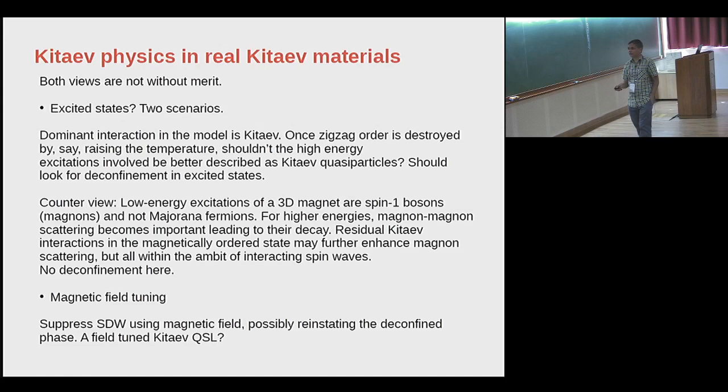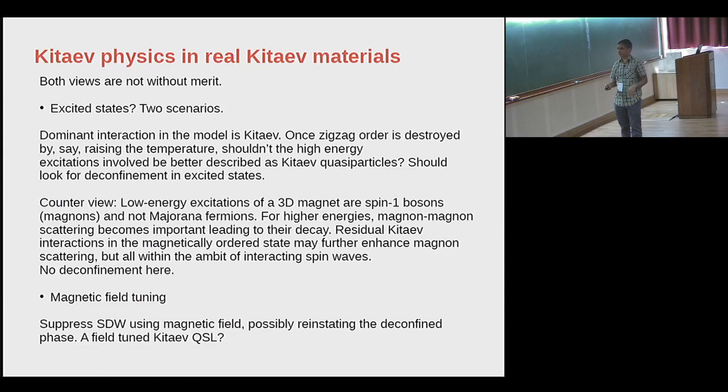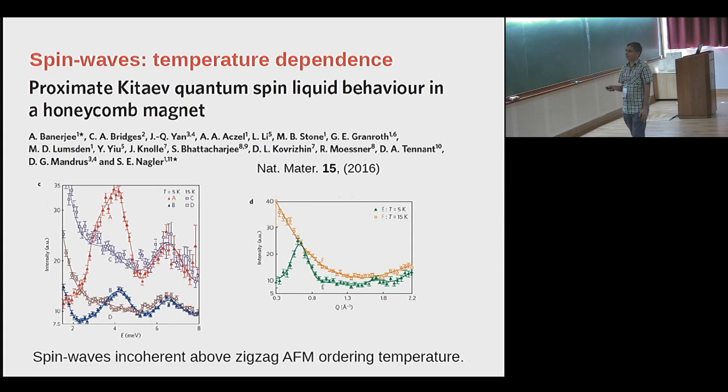The second strategy is to not look at very high excited states, but to go to low-energy states and instead try to destroy the magnetic order using a magnetic field. Suppress the spin-density wave order using a magnetic field, which will possibly reinstate the deconfinement phase. So can you have a field-tuned Kitaev-type quantum spin liquid in these real materials?